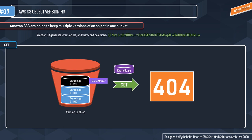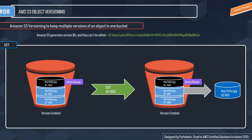Even if you have a delete marker, you can make a GET request to a non-current version of an object by specifying its version ID. For example, the delete marker is set to 3451 as the current version. If you do a simple GET request you'll get 404, but if you do a GET on version 1001 — the second version of the object — it will return hello.jpg with version ID 1001. So even though the delete marker has been set, you can still retrieve non-current versions by sending a GET request with the specific version ID.